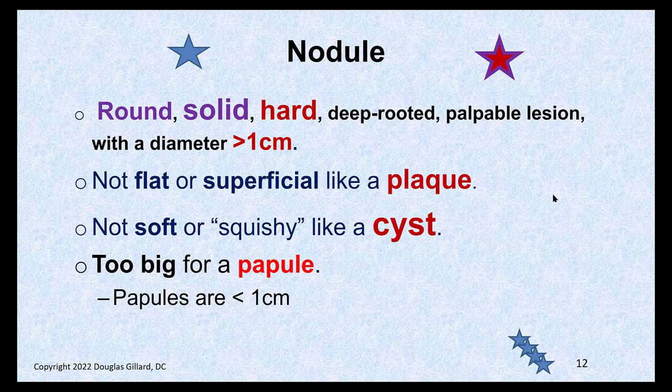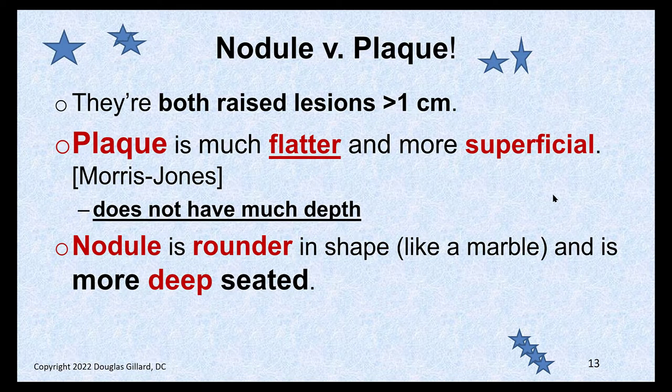How about a nodule? This can get a little complicated. Nodules are round, solid, and hard — that's the key. Cysts are round and fairly solid too, but they're not hard; they're squishy and resilient. Nodules are greater than one centimeter, and papules are less than one centimeter, so a papule is just like a little nodule. A nodule versus a plaque is easy: a nodule is round and hard, while a plaque is flat and typically more superficial.